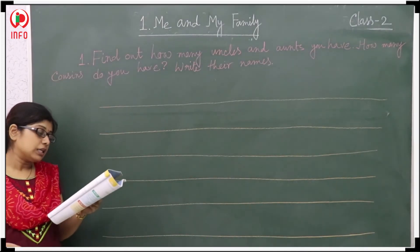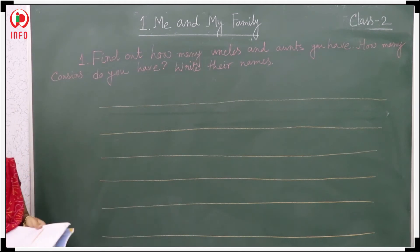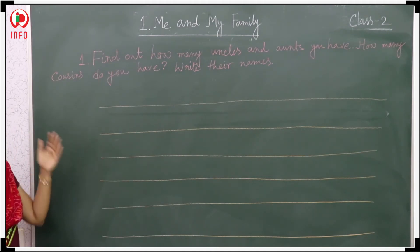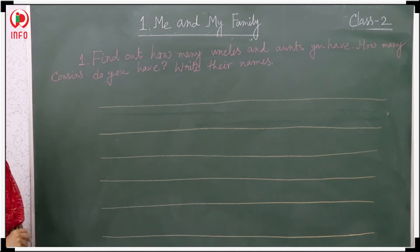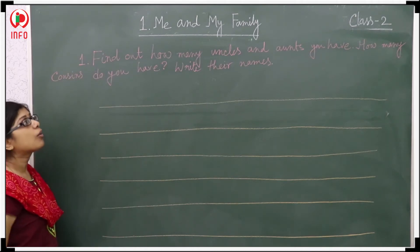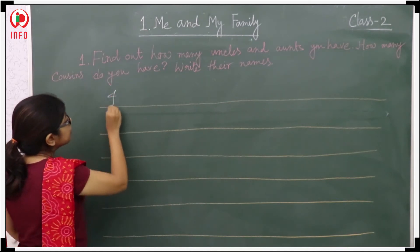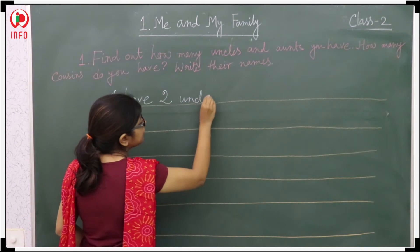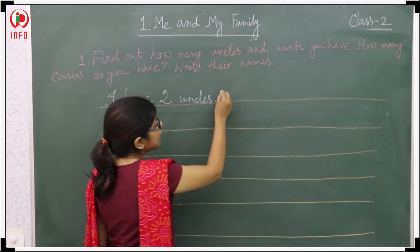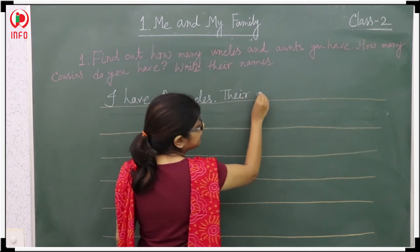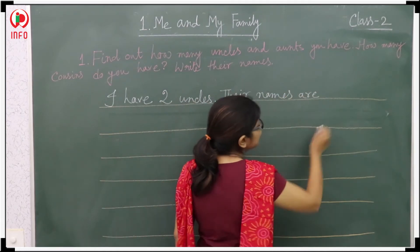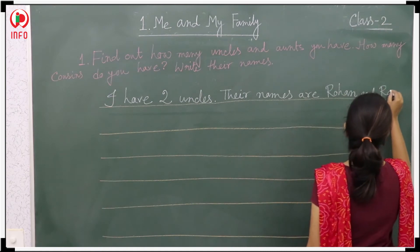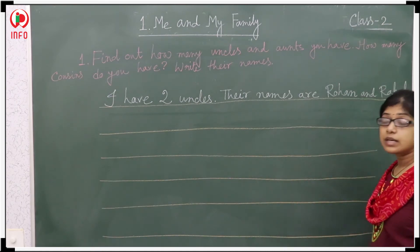Now I will discuss the project. First project: find out how many uncles and aunts you have and write their names. So here I have two uncles. Their names are Rohan and Rahan.